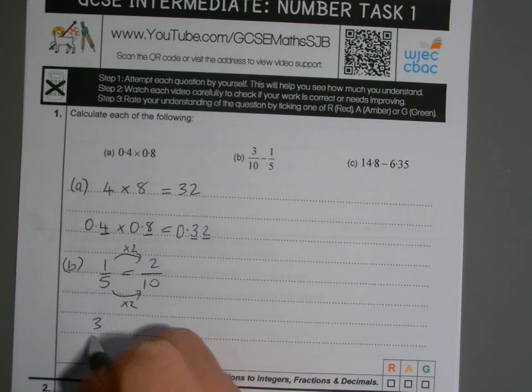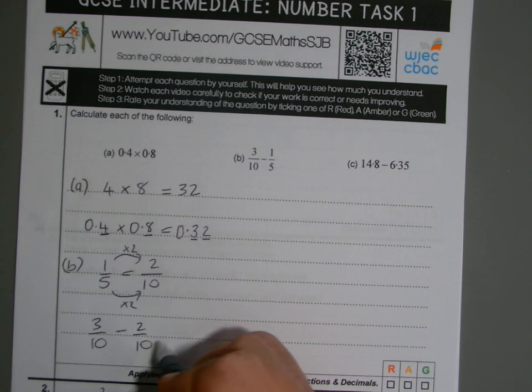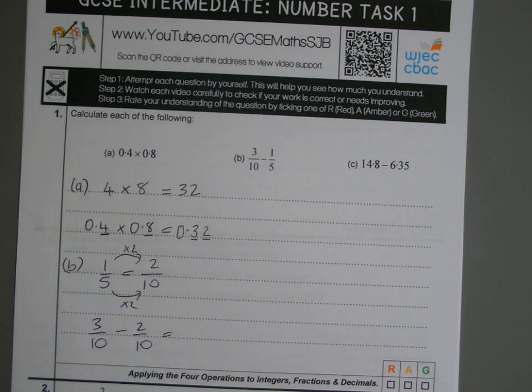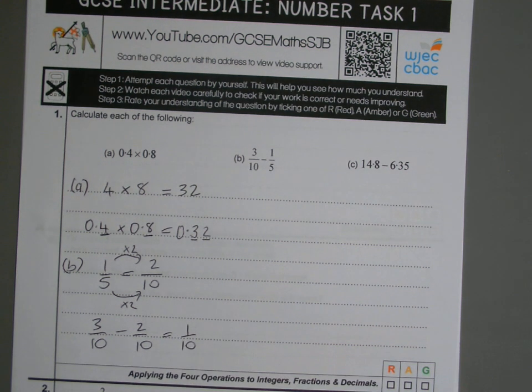And if I go back to the question, I'll end up having 3 tenths take away 2 tenths. And then that's easy, because if I've got 3 tenths take away 2 tenths, I end up with 1 tenth. So there's my answer.